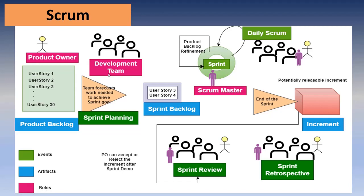In agile methodology we don't have different hierarchies inside the development team — no team lead, manager, or similar roles. Whoever contributes to a particular sprint as a developer or tester, the entire team is called the Development Team. No one is superior to another, which is why the development team is a self-organized team in agile. No one will assign tasks to you — among your team members you decide who works on which user story and which task, and you assign it to yourself.